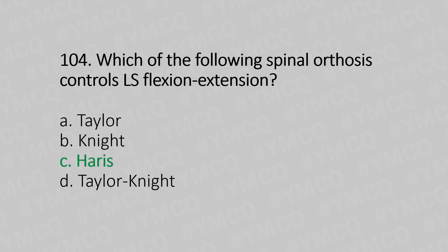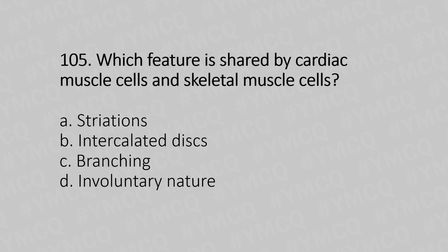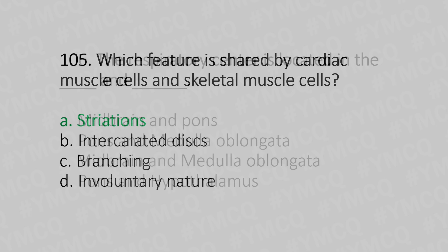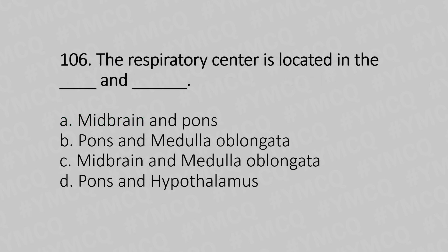Question number 105: Which feature is shared by cardiac muscle cells and skeletal muscle cells? Option A: striation, Option B: intercalated disc, Option C: branching, Option D: involuntary nature. The answer is Option A, striations.